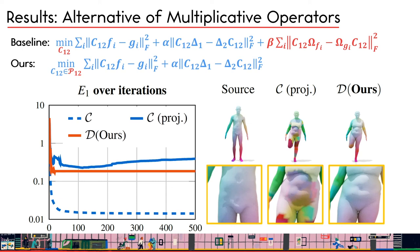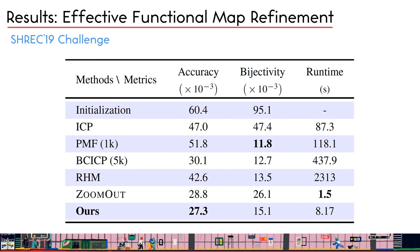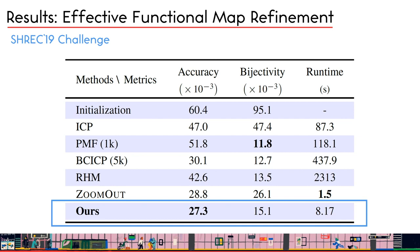The second application is a new refinement method that applies our discrete solver to a combined energy. We compare this refinement method to other post-processing methods on the SHREC-19 challenge, and our method achieves better accuracy and bijectivity than the best baseline ZoomOut with comparable runtime.